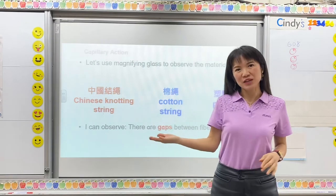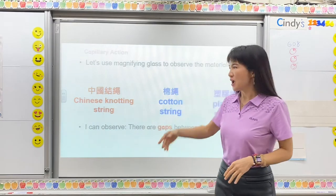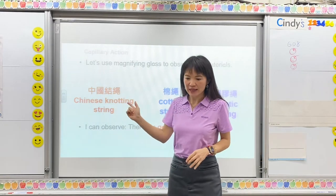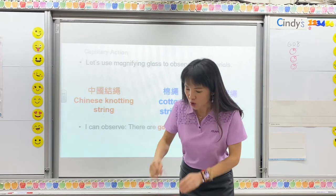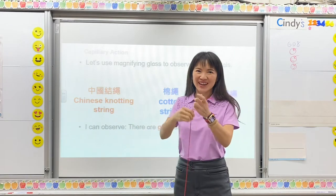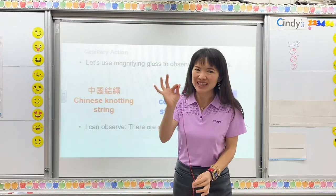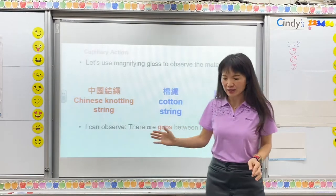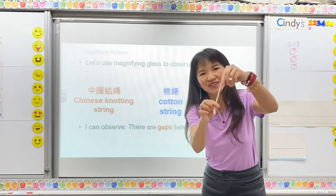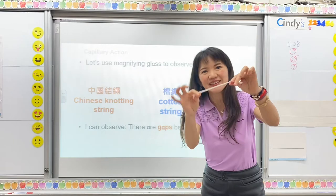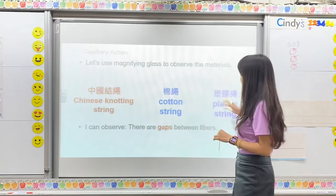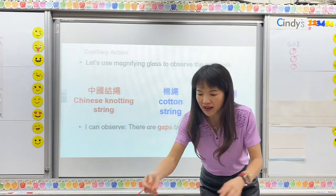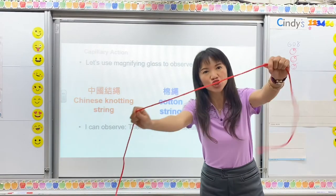I have three materials here. One is the Chinese knotting string — in Chinese, we say 中国节绳. And the second one is cotton string, that is 棉绳. The third one is the plastic string, that is 塑胶.